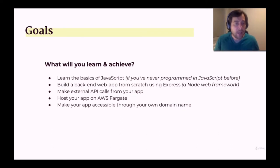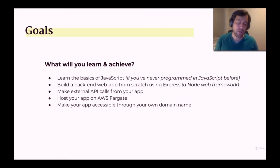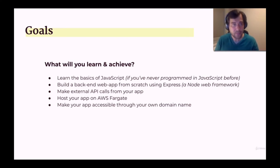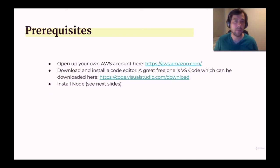Finally, optionally, you'll be able to purchase your own domain name if you don't have one already and link it to your application running on AWS Fargate. These are all the things you're going to learn over the course of this course.